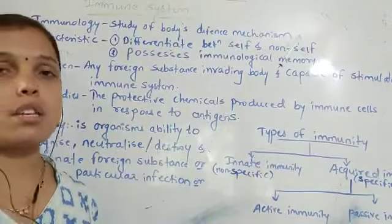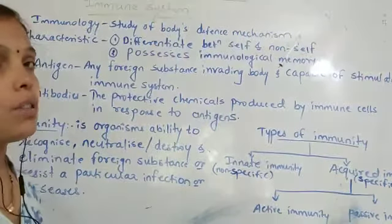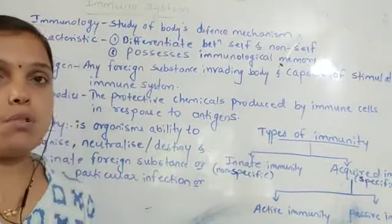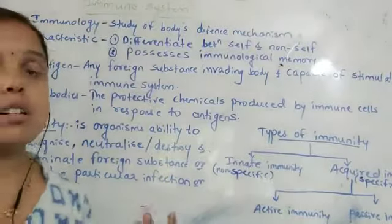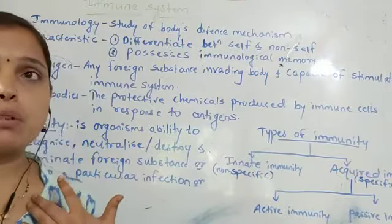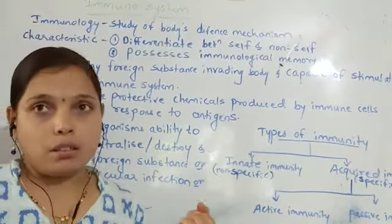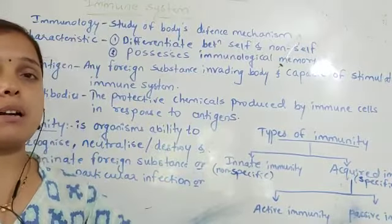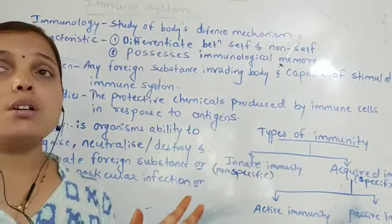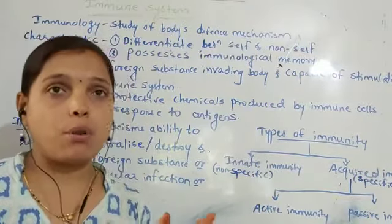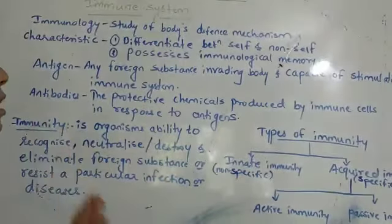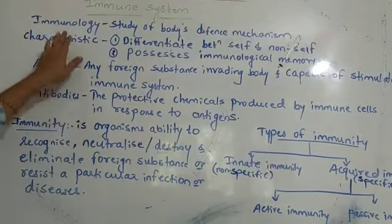The immune system has the capability to defend against disease-causing organisms, that is, pathogens. It consists of structures, tissues, and cells that are responsible for defense, along with antigens and antibodies, which work together to protect our body.